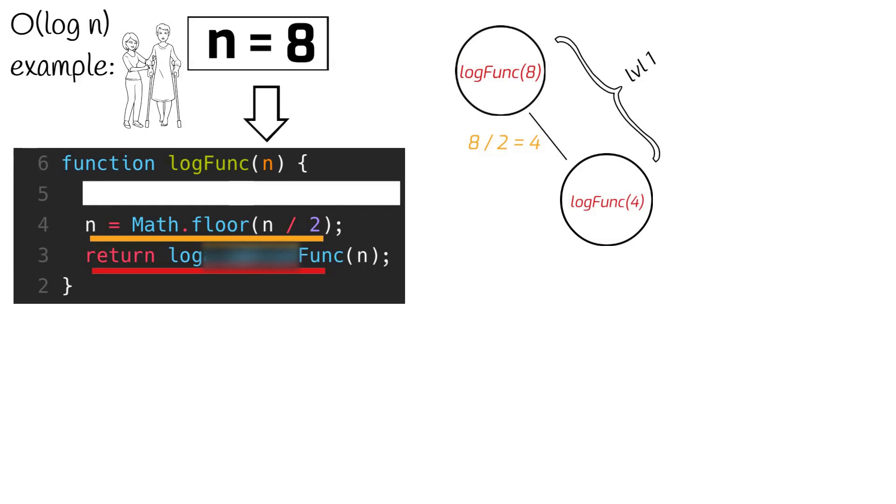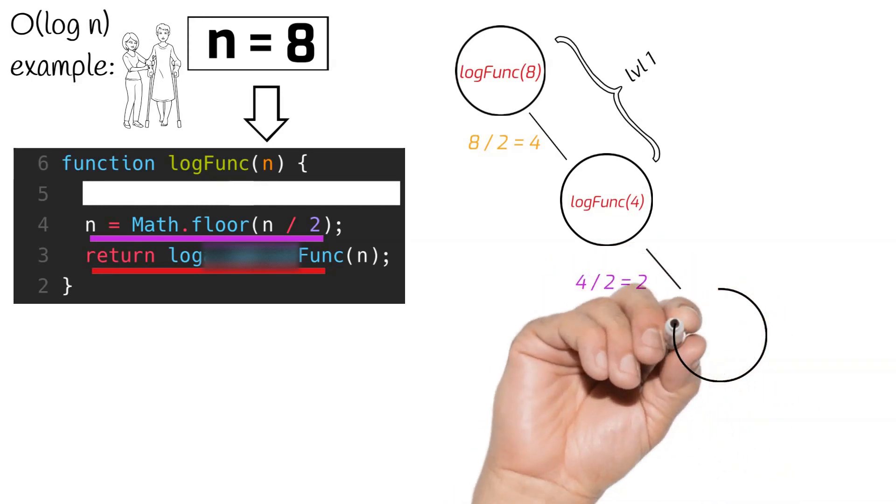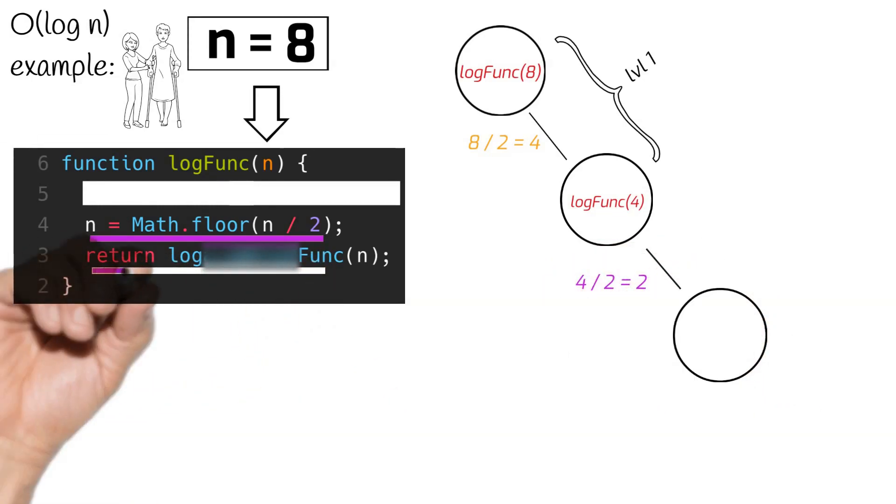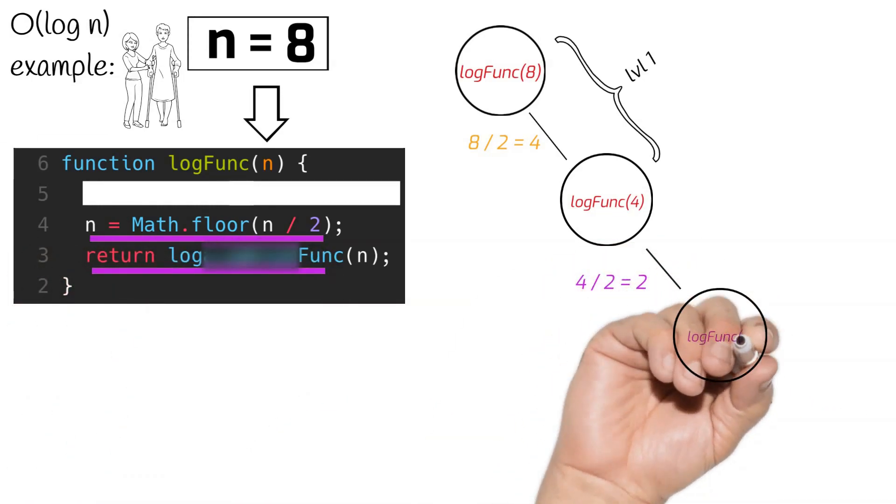We then do the same thing with our new value for n, which is 4. That 4 is divided by 2, resulting in a new n, and the function then passes our new value for n to a recursive call to itself again, resulting in us going one more level deeper.